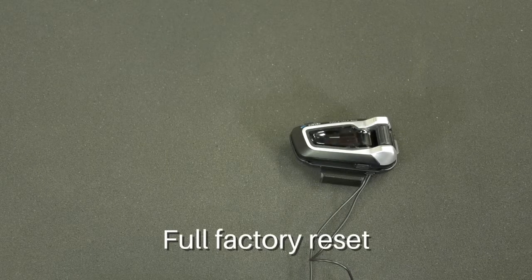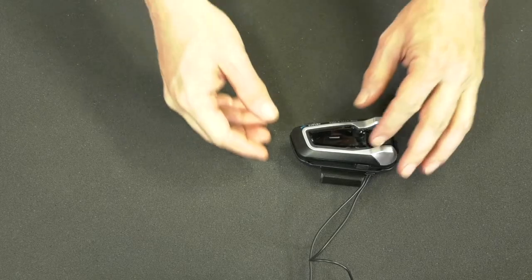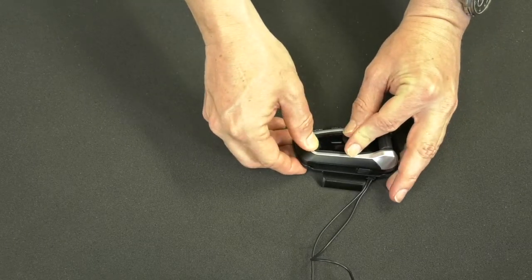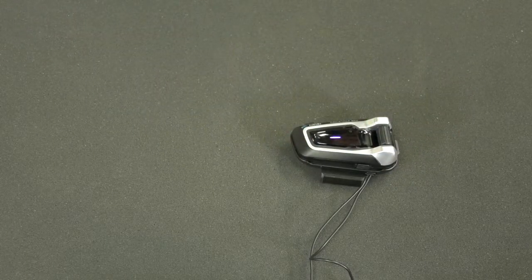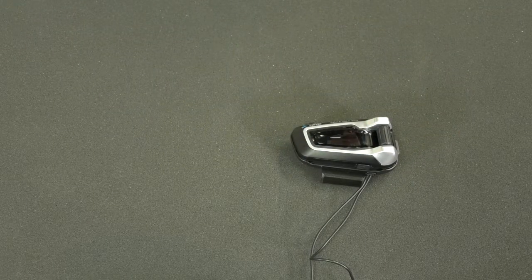For a complete factory reset, press the three frontal buttons for a few seconds until you see the purple light flashing. The unit will flash purple and then it will shut off.